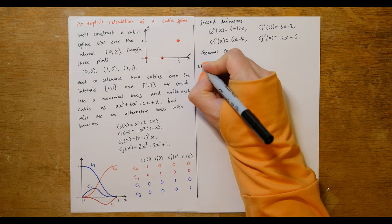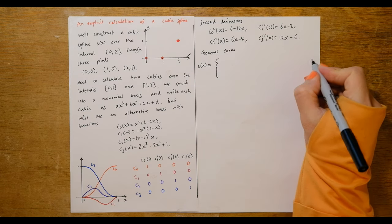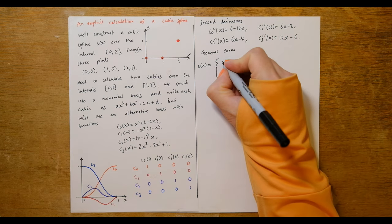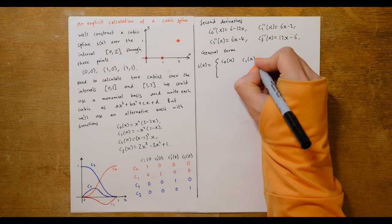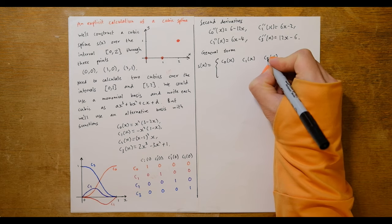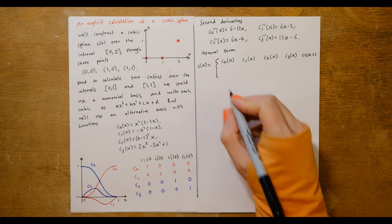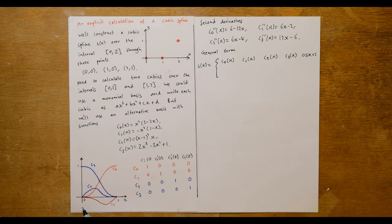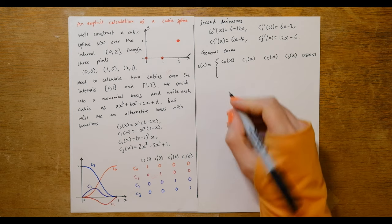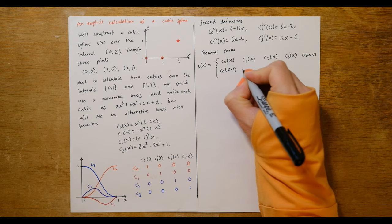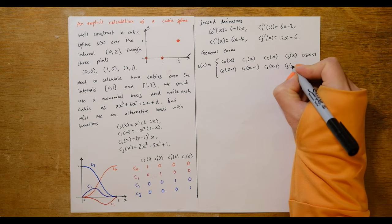We can now write down the general form for our spline. s(x) has two different ranges: from 0 to 1 it is a combination of c0(x), c1(x), c2(x), and c3(x). For the range from 1 to 2 we use the same basis functions but shifted by 1 — so c0(x-1), c1(x-1), c2(x-1), and c3(x-1) — giving the nice properties at x=1 and x=2 instead.